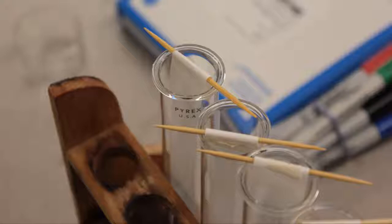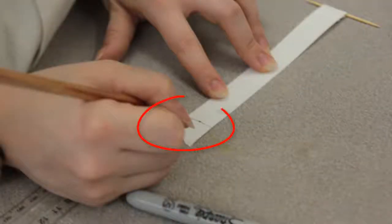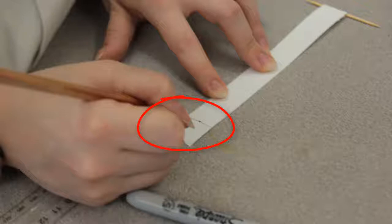Once you've prepared your strips, draw a line with a pencil about an inch from the bottom of your paper and draw a pencil dot in the center of the line, indicating where you will dot the pigment.